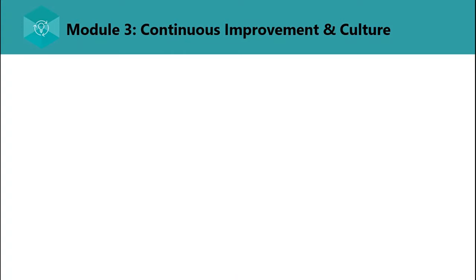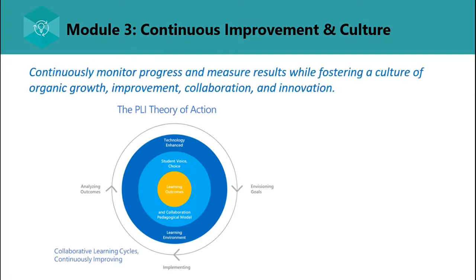Let's go to the third module of Leadership and Policy: Continuous Improvement and Culture. As the education leader, continuously monitor progress and measure results while fostering a culture of organic growth, improvement, collaboration, and innovation. To truly usher in impactful change, leaders must transform behaviors — both the learning behaviors of students and the teaching behaviors of staff. Education leaders at all levels can benefit from applying the planning, monitoring, and evaluation cycle to education transformation initiatives.